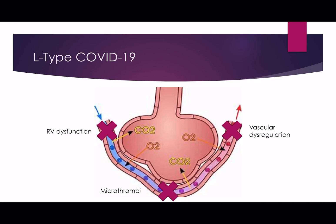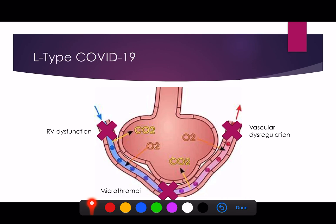It's really worth thinking about this schematically, because if you think about the L-type of COVID, there seem to be three areas that are problematic. We talked about the vascular dysregulation — you're getting inappropriate vasodilation in areas that aren't being oxygenated. You're getting rid of that hypoxic vasoconstriction, and therefore you're getting blood flowing through these vessels even though this alveolus may not have any oxygen in it. You're also getting microthrombi, so even if your alveolus is full of oxygen, because of these microthrombi blood isn't able to get through, and it shunts around them. Therefore, even though you've got good alveolar units, there's not blood going through that gets oxygenated and goes into the left side of the heart.